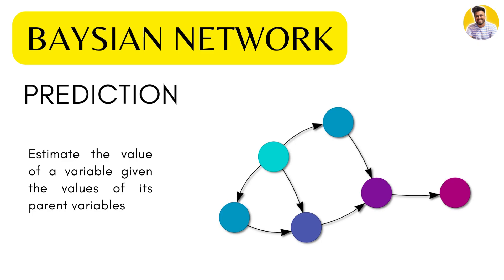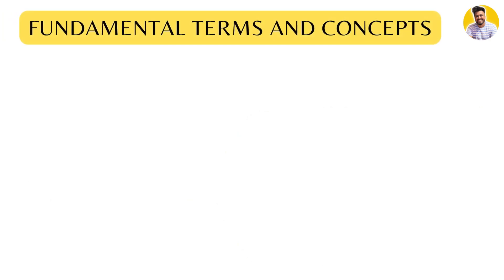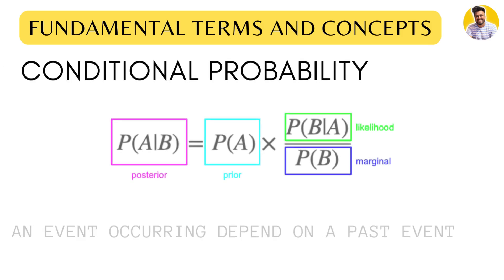In decision-making tasks, Bayesian networks are used to determine the best course of action based on the probabilities of different outcomes. For example, in medical diagnosis systems, Bayesian networks can determine the probability of different medical conditions given a patient's symptoms and medical history, helping doctors make informed decisions about treatment options.